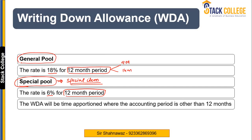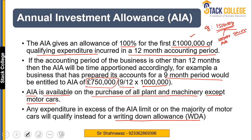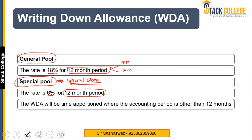The difference between AIA and WDA is that AIA is available in the year of acquisition. Afterwards, when you are using the asset in subsequent years, every year you can claim either 18% Written Down Allowance (for main pool) or 6% (for special rate pool). This is available on a reducing balance basis.